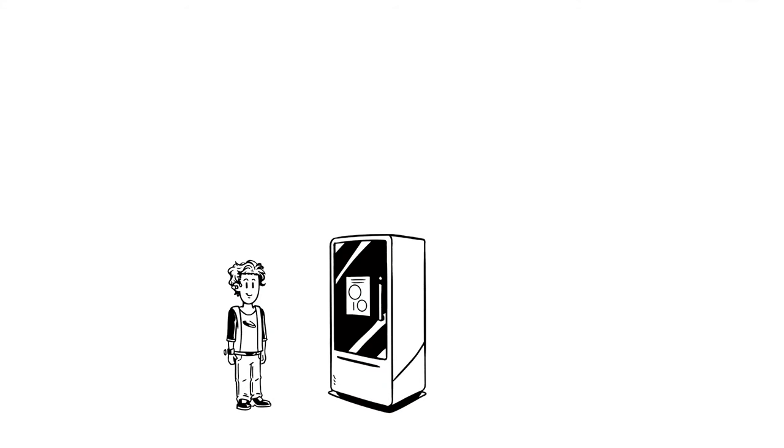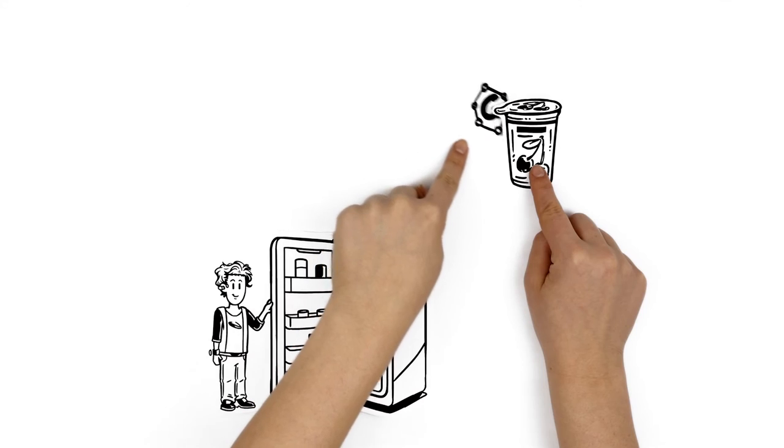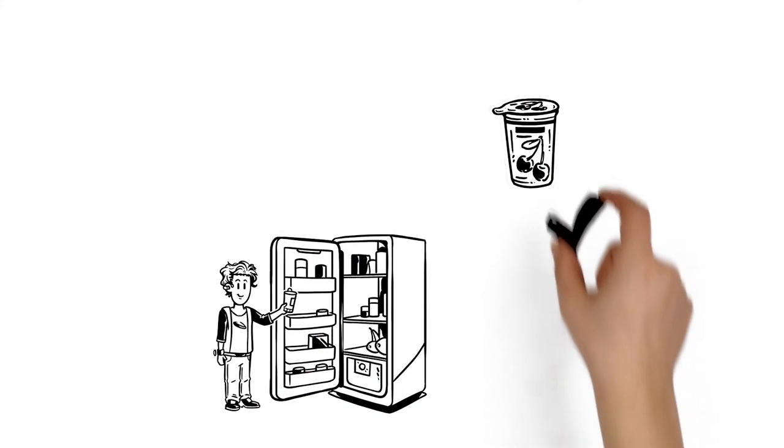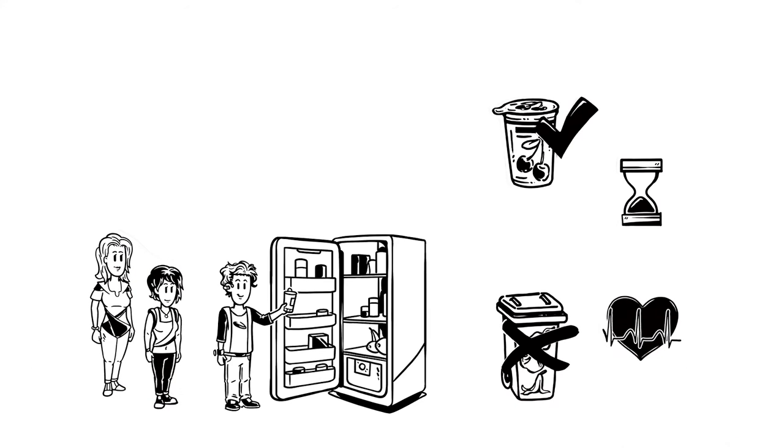At home, Josie's son Adam opens the fridge to have a snack. By a Graphene tag integrated in the label of the yogurt, he can check if it's still edible even though it passed the expiration date. That way the family avoids wasting food without risking their health.